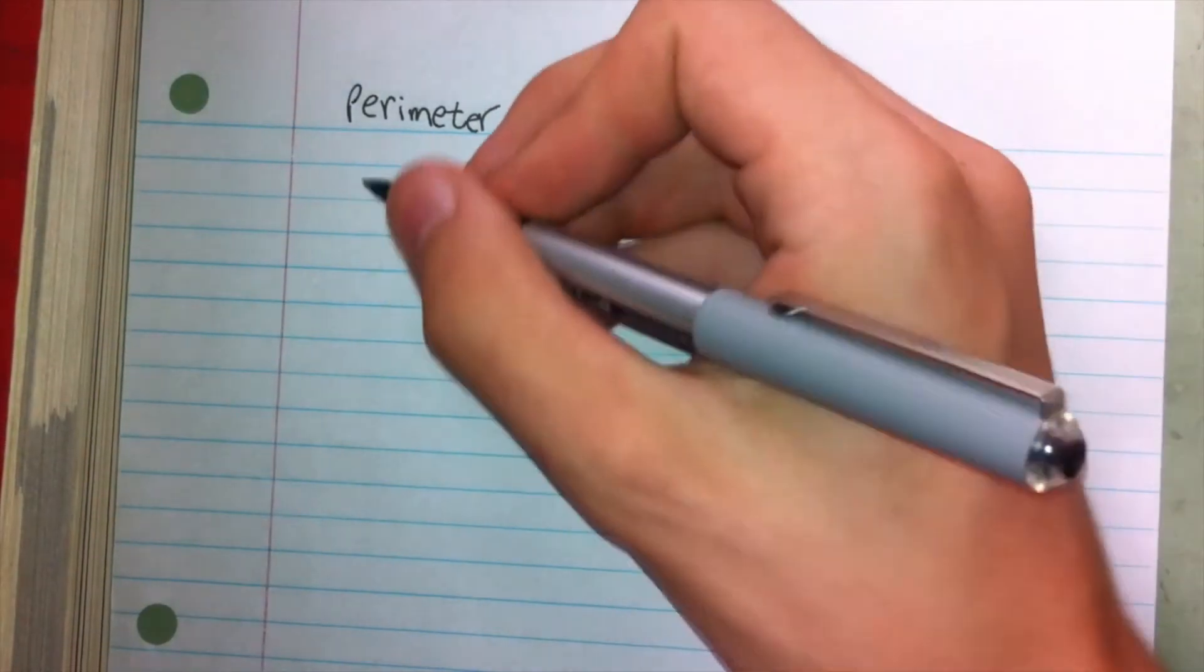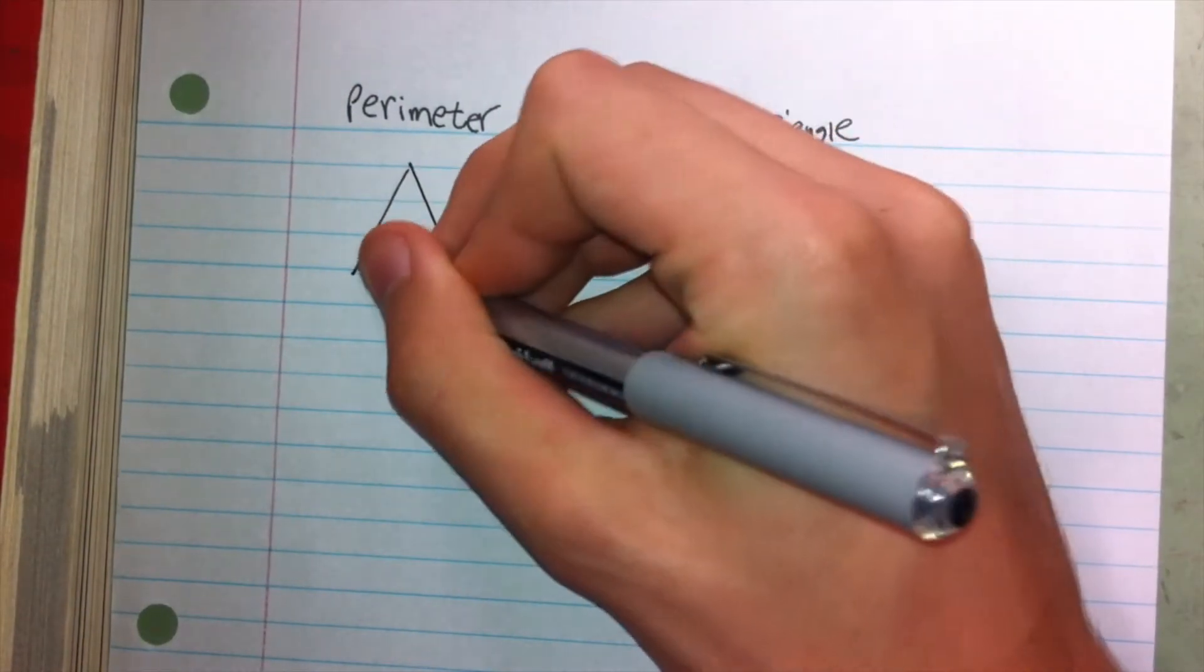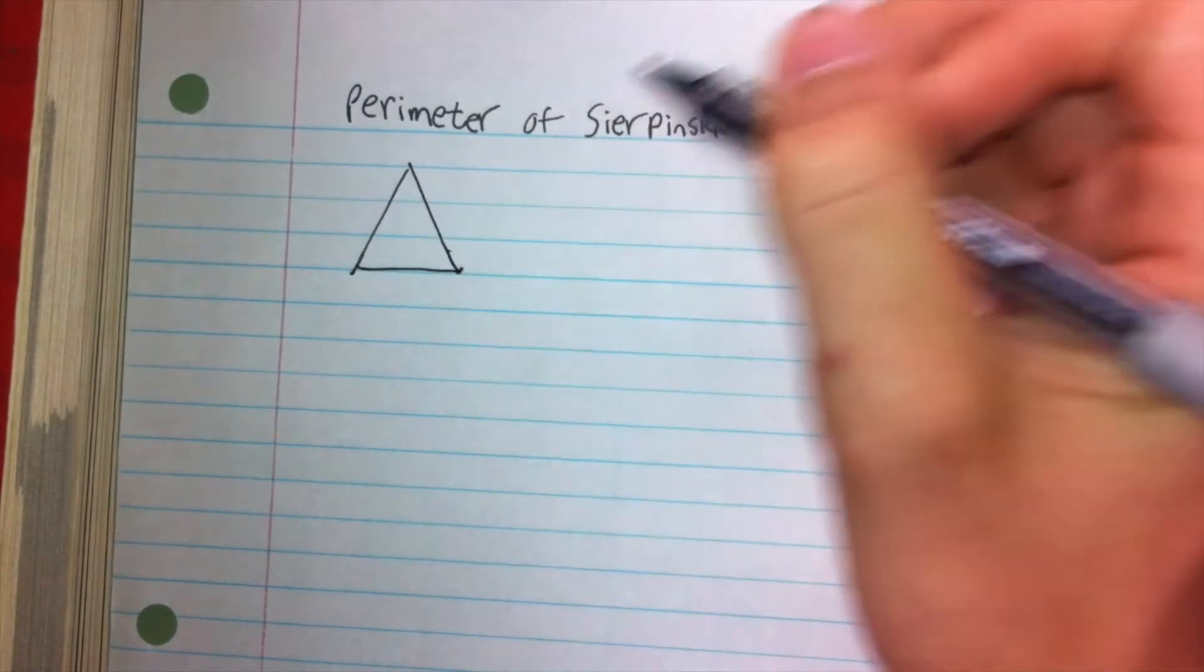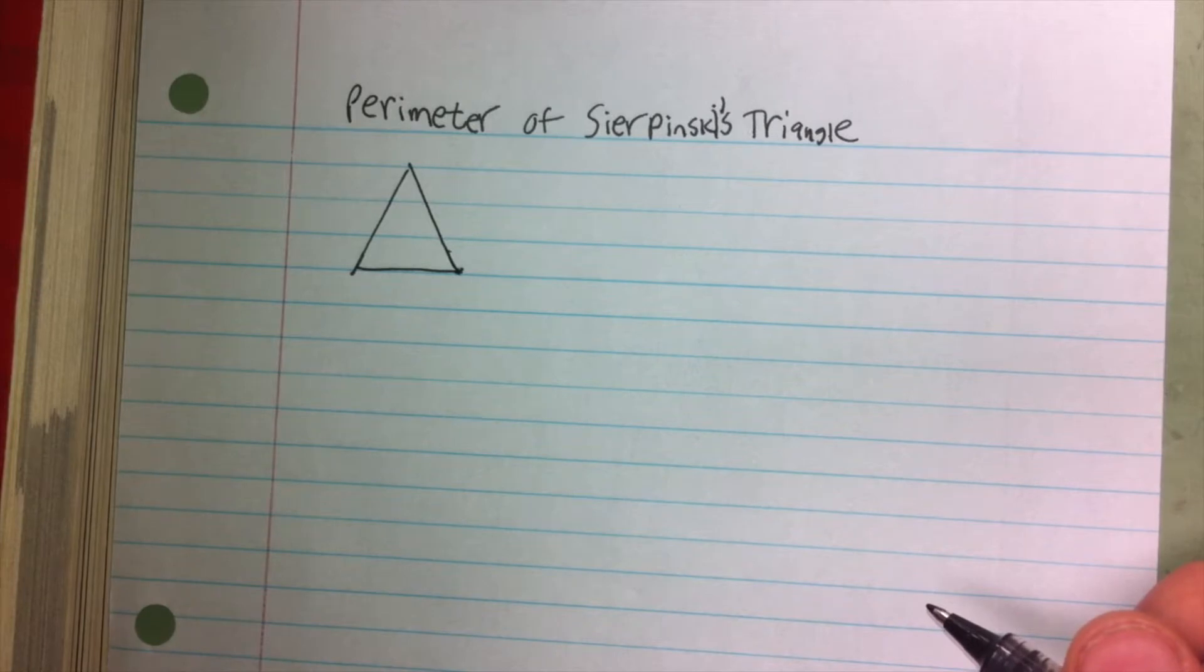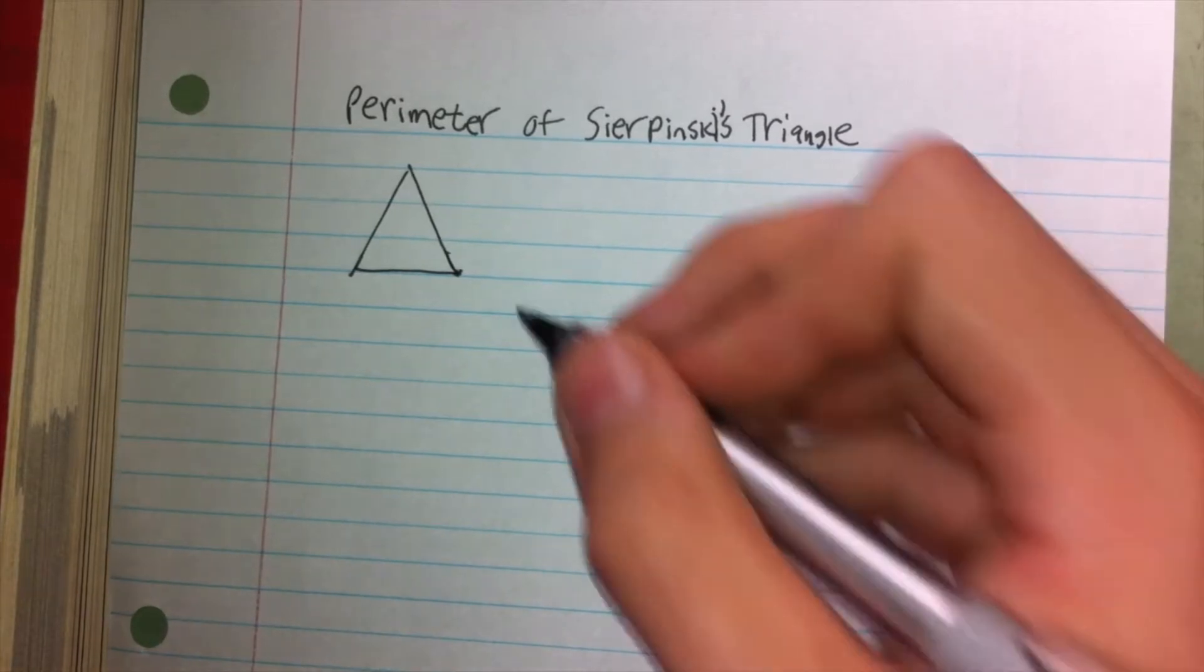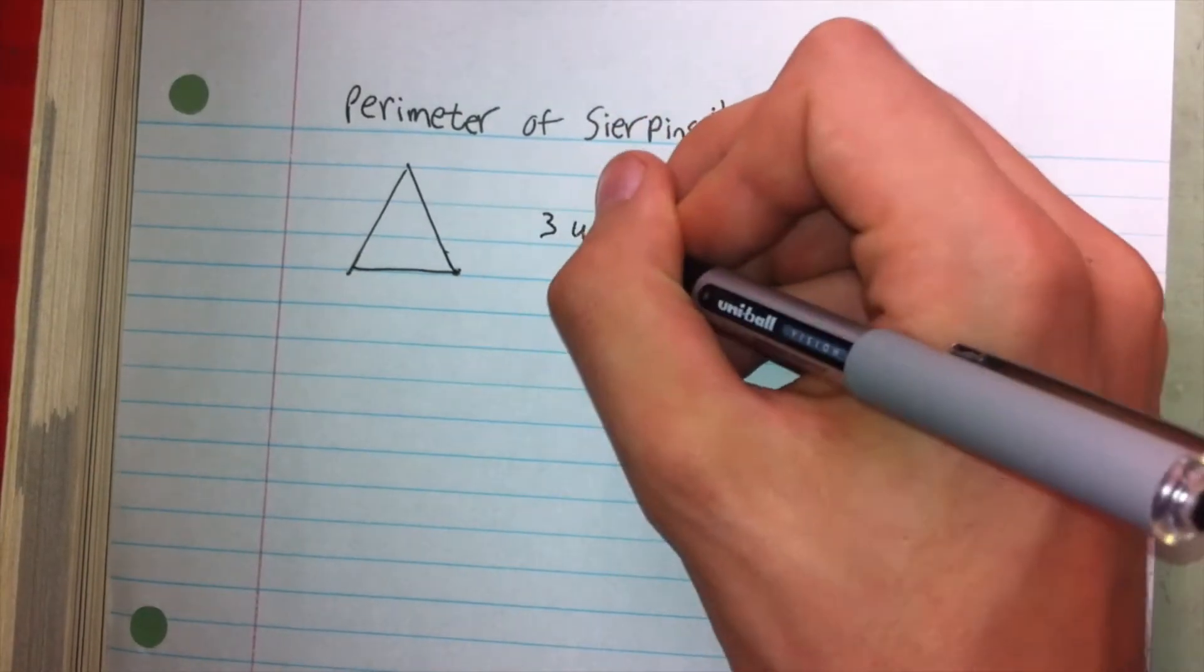Sierpinski's triangle starts out as an equilateral triangle, and we're going to assume that each length of the equilateral triangle is one unit, and so the perimeter is three units.